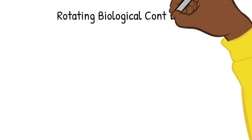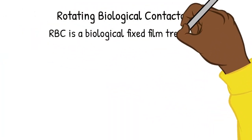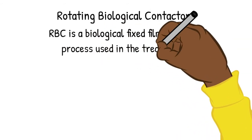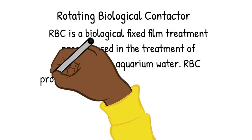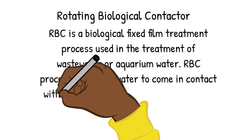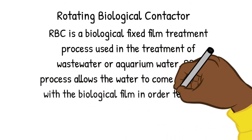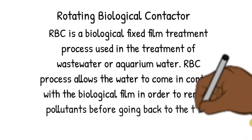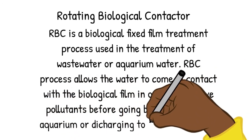A rotating biological contactor (RBC) is a biological fixed-film treatment process used for treating wastewater or aquarium water. The RBC process allows water to come into contact with a biological film in order to remove pollutants before returning to the tank, aquarium, or being discharged to the environment.